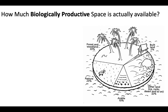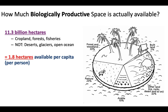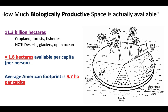Let's look at how much biologically productive space is actually available around the globe. Discounting deserts, glaciers, and open ocean, about 11.3 billion hectares are available for producing resources we need — whether it's cropland, forests, or fisheries. With about 8 billion people on the planet, that's about 1.8 hectares available per person per capita. In America, the average ecological footprint is 9.7 hectares per person, so there's a massive discrepancy. We require almost 10 hectares per person but in theory should only be using about 2 hectares per person. America has experienced something like an overshoot — we've exceeded our carrying capacity. In the short term, we will survive, but in the long term that's not sustainable.